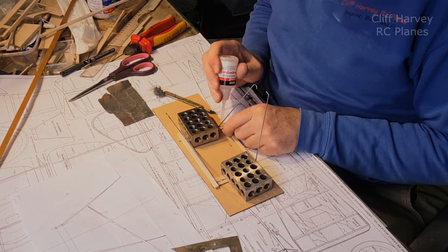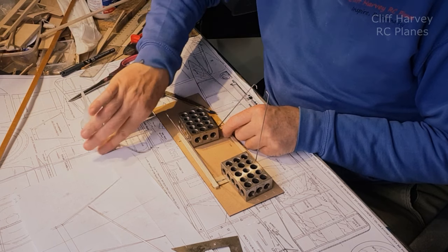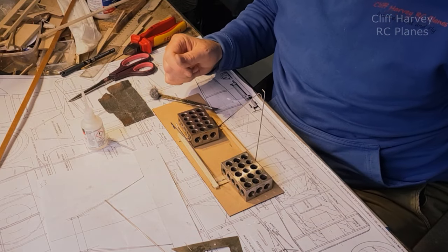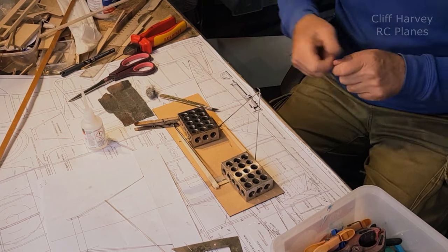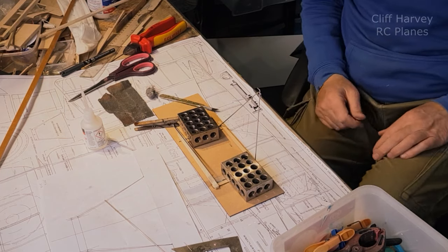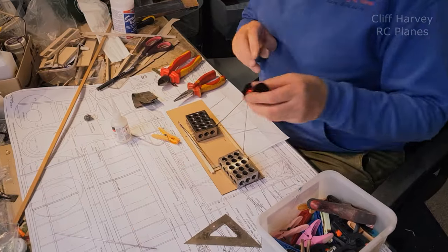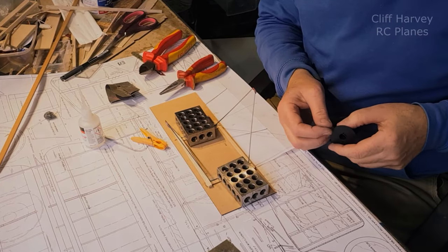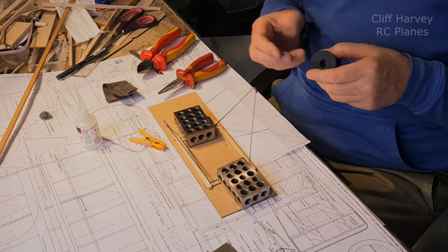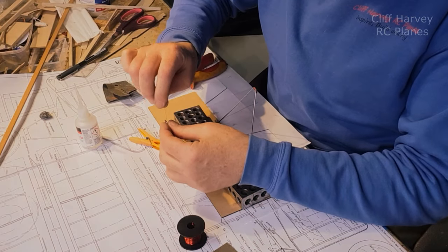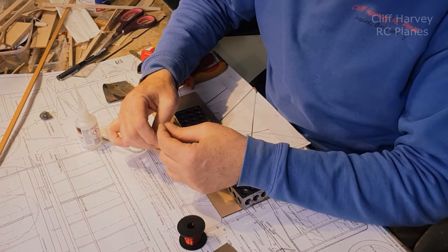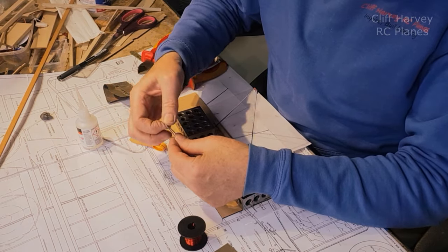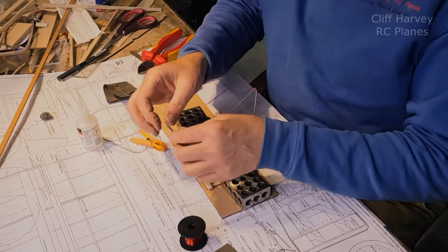I'm just going to CA that in position. Now I need to bind that up with some copper wire. I've got some coated copper wire and I think I've got all the coating off, but we'll find out if it doesn't solder. I'm just binding it around and around. Finish it off, and there we are, they're both bound now.